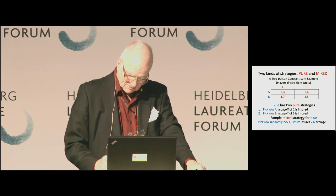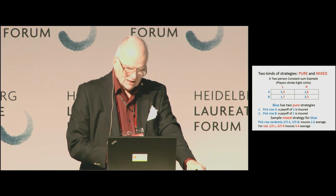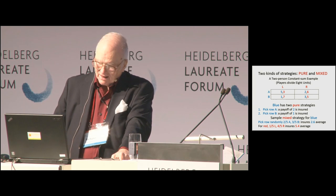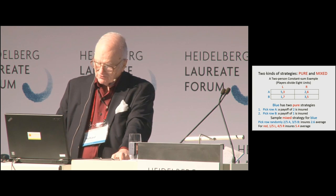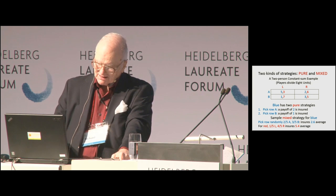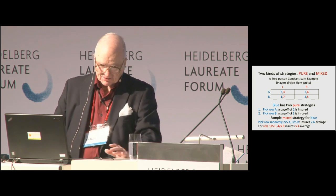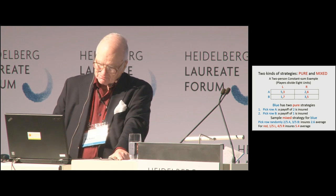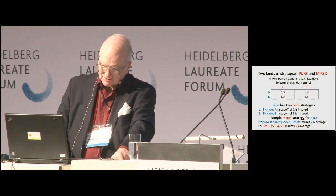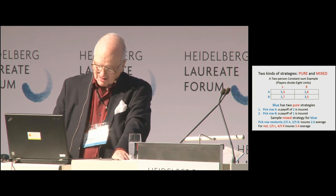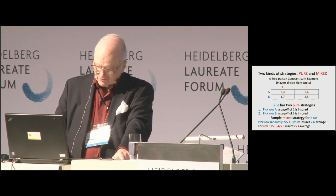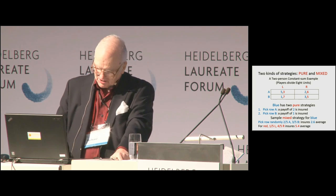If red comes to me and says what should I do, I say red, you can pick one-fifth L and four-fifths R, and that ensures red an average of 5.4. Notice that 5.4 and 2.6 add up to eight, which is the amount being distributed. That's the property of constant-sum games: when each player uses the mixed strategy which guarantees them the most, no further advantage is available.